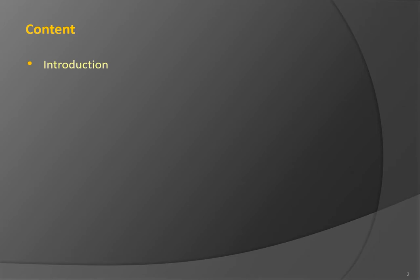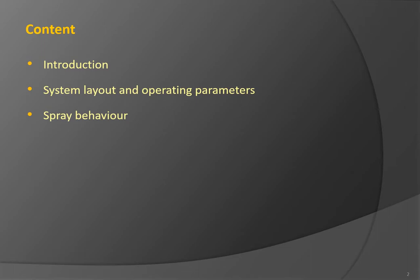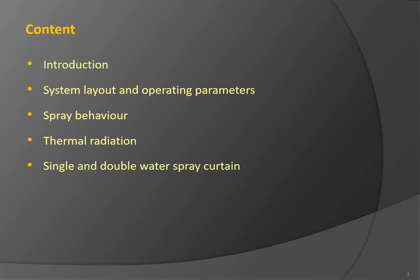The subject is organized in eight sections. In the introduction, we will define the accident scenario which was modeled and present the overall objectives of the study. The layout and main operating parameters of the investigated spray system will be described next. This is followed by a brief description of modeling principles of the spray and droplet behavior, with the description of CFD simulation domain and its boundary conditions. We will also look at how to model thermal radiation and its attenuation by spray droplets. Next, a quick review will be performed of the initial CFD simulation results for the single and the double water spray curtain.